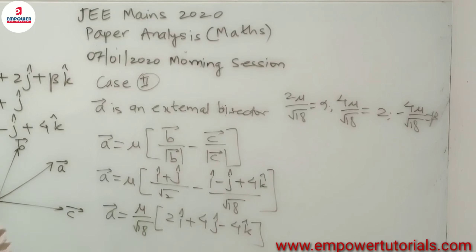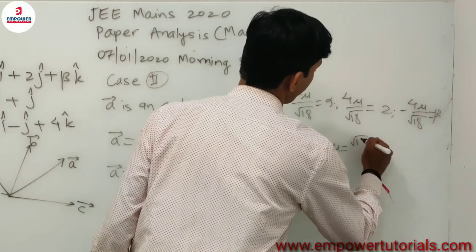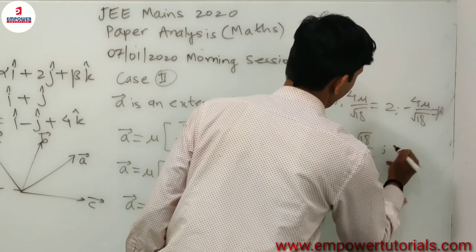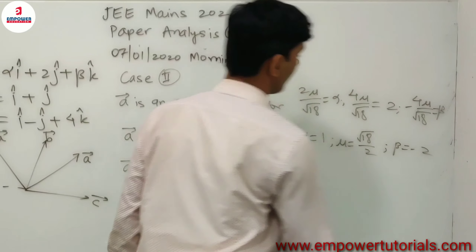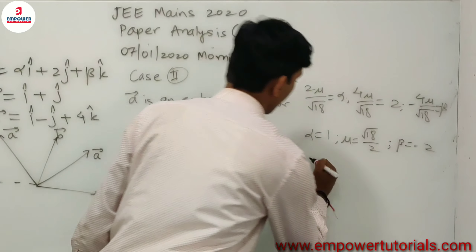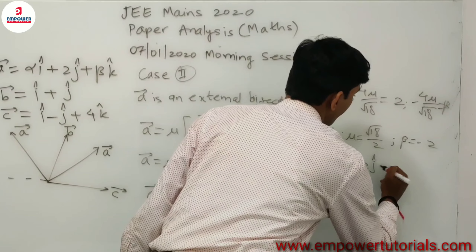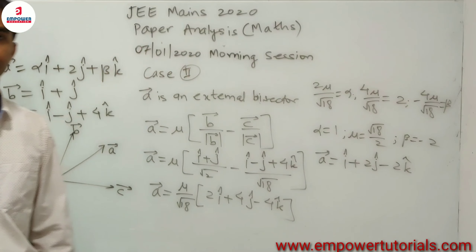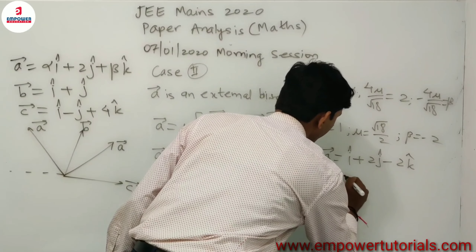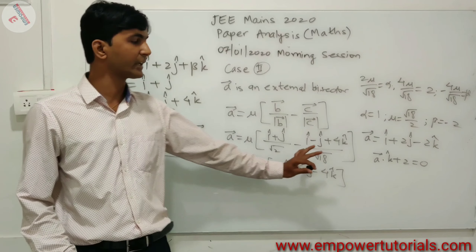Solving gives α = 1, μ = √18/2, and β = −2. Substituting back, **a** = î + 2ĵ − 2k̂. Checking the options, we get **a**·k̂ + 2 = 0, which is satisfied. This is the correct option.